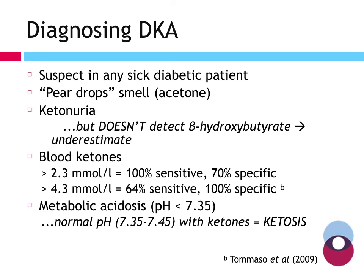How do we diagnose DKA? You must suspect it in any sick diabetic patient. It's much better to assume and look for it than let it go undetected. People often mention a pear-drop smell — acetone, one of our three main ketones, has a distinctive smell almost like nail polish remover. Interestingly, there's a genetic link to whether people can smell it — and one medicine specialist noted a possible link to whether you can roll your tongue into a tube. However, this is obviously a very ineffectual way of diagnosing DKA.